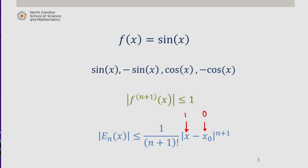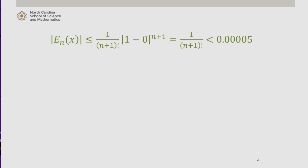Which means that we want to find n such that the error bound is bounded above by 1 over n plus 1 factorial times the absolute value of 1 minus 0 to the n plus 1, which is equal to 1 over n plus 1 factorial. And we want that error to be less than 0.00005.